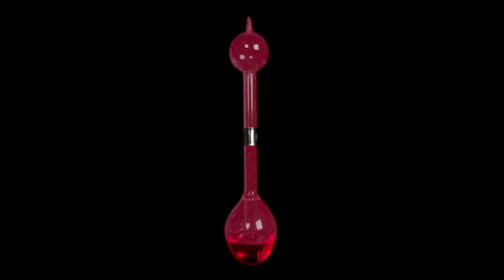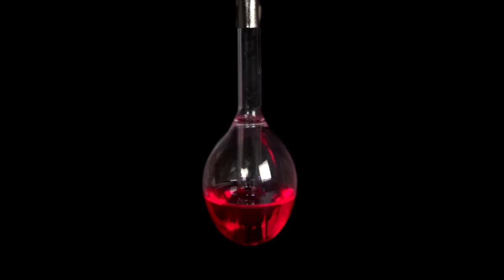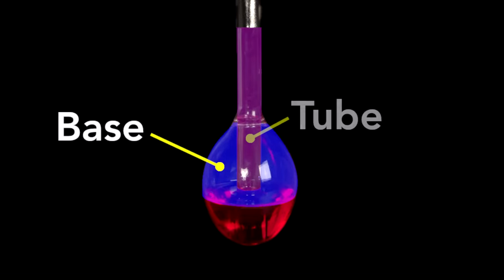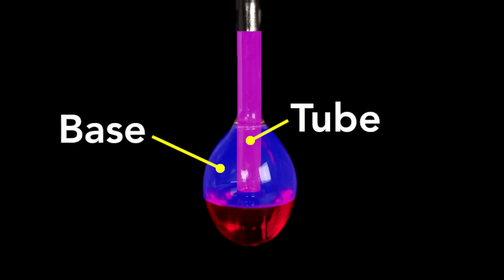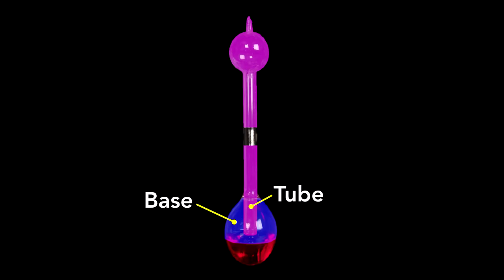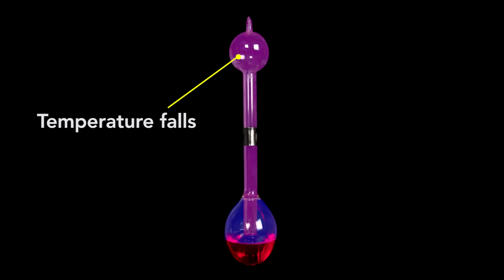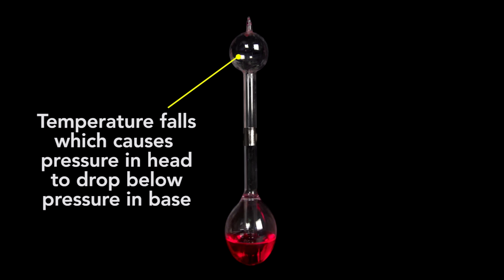The key to the bird's operation is that the vapor in the head and in the base are separated by the liquid in the base. It's hard to see, but a tube extends into the base, nearly reaching the bottom. This separates the vapor in the base and the vapor in the tube and of course, the head. At rest, the pressure in these two spaces are equal, but when the bird's beak is wet, the temperature falls, and as I'll explain in a moment, the pressure in the head drops below that in the base and the liquid rises.